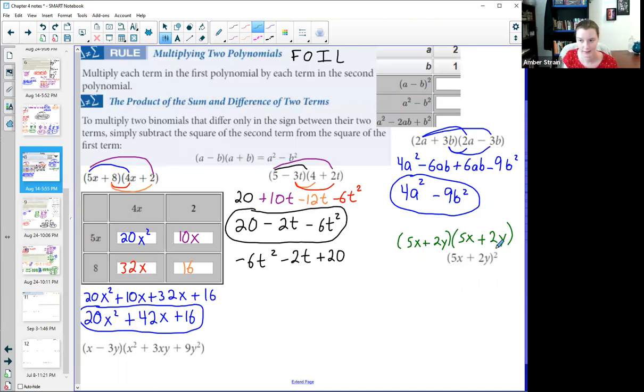So what seemed like should have been a really quick, easy problem actually did need the foil. So I go first times first, which is 25x squared. Outer times outer gives me a 10x and a y. Inner times inner gives me another 10. I could write yx, but I like alphabetical order. And then last times last, 2 times 2 is 4. Y times y is y squared. And when I'm combining this, notice, unlike the last one we just did, these are not plus minus. These are exactly the same. So this is going to give me not a cancellation, but 20xy's.